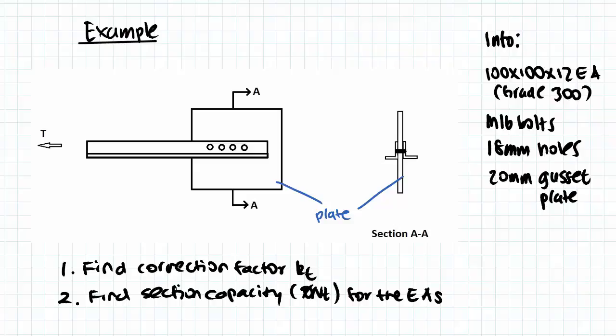Now what this question wants us to do is find the correction factor first, kt, and this will be determined by the configuration. And after finding the correction factor, we will find the section capacity in tension, which is Phi and T.